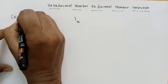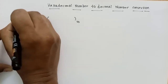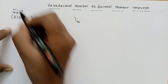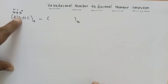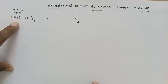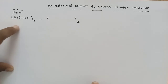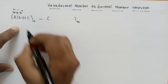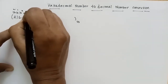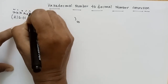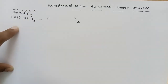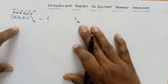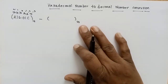The least significant bit position and most significant bit position will be placed. The power of 16 will increase. The first position is 16 power 0, then 16 power 1, then 16 power 2. For the fractional part, the powers are 16 power minus 1, 16 power minus 2, 16 power minus 3.